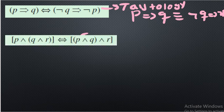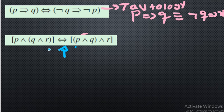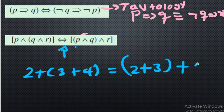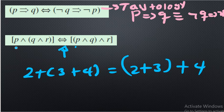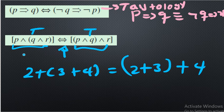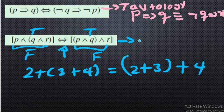The third one is (p and q) and r biconditional p and (q and r). Again the middle connective is biconditional. The right side is p and (q and r). This is the associative property of conjunction — just like 2+3+4 is the same as (2+3)+4, we can group in any order. So the left hand and the right hand of the biconditional are the same compound propositions, and we conclude: tautology again.